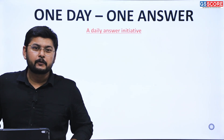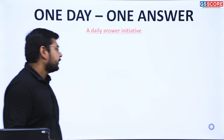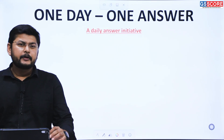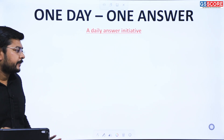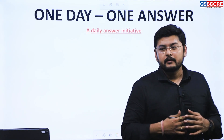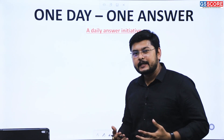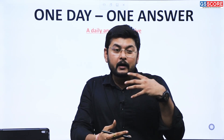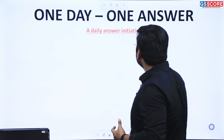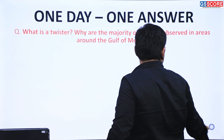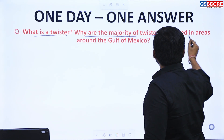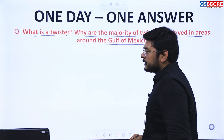Hello everyone, welcome to GIS Core. I am Krishna Gupta. This is the one day one answer initiative where we will be discussing questions from previous year papers. We study a lot of concepts, but in examination, how the concepts are represented, how they are asked, and how the demand of the question has to be fulfilled is a secondary part here. So today we will be seeing the first question of the day: what is a twister, and why are the majority of twisters observed in areas around the Gulf of Mexico?